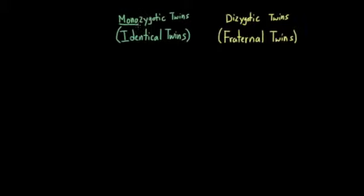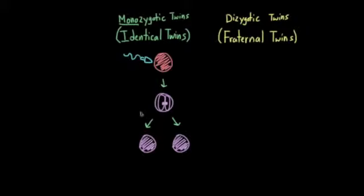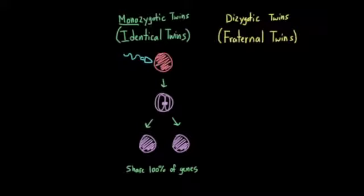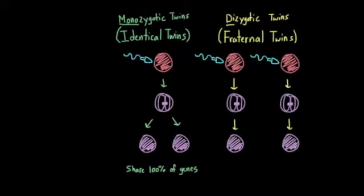Monozygotic twins develop from a single fertilized egg—one egg, one sperm, the egg splits into two after fertilization. Because the split occurs after fertilization, monozygotic twins are genetically identical, sharing 100% of their genes. Fraternal or dizygotic twins develop from two separate fertilized eggs, each fertilized by a different sperm, so they share 50% of their genes—the same genetic relatedness as regular siblings.